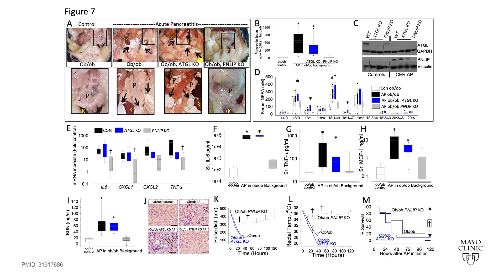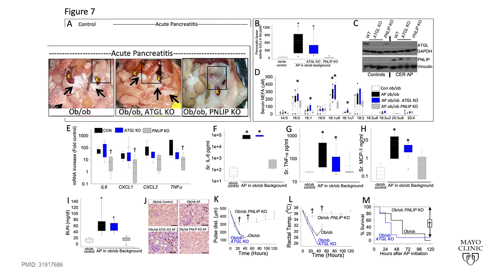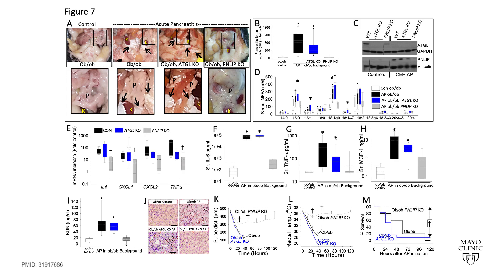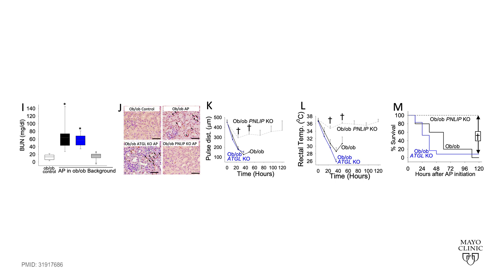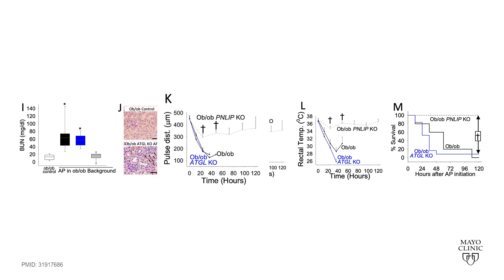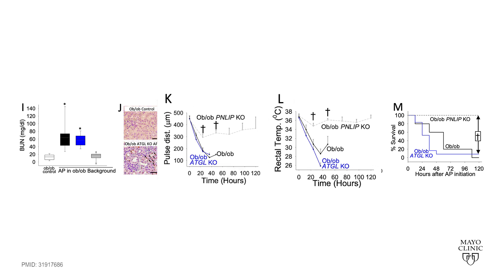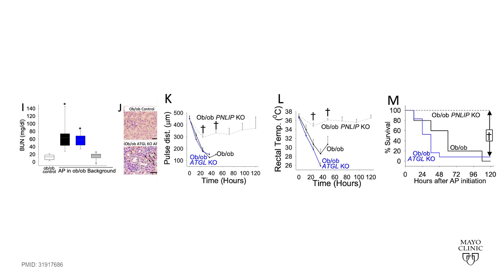The PNLIP knockout mice with pancreatitis have a specifically lowered lipase increase in their serum and also in their fat pads. This results in the PNLIP knockouts having lesser fat necrosis, shown as these cheesy white areas, along with lesser systemic inflammation as seen by lower cytokine levels in the serum, and prevention of renal failure, shock, and hypothermia, along with a dramatically improved survival.